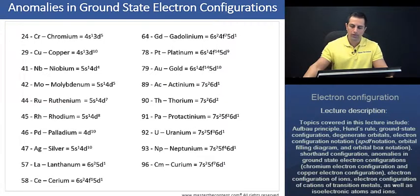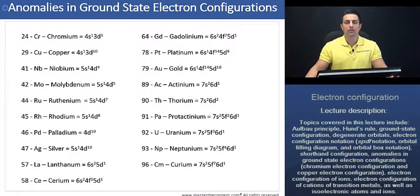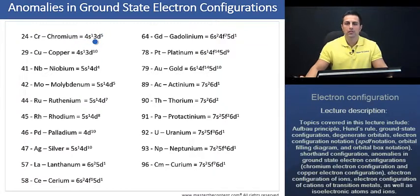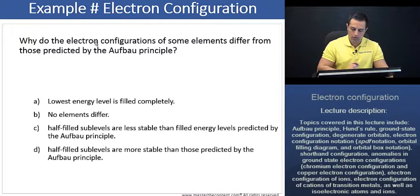Here we've provided a list of anomalies in ground state electron configurations, beginning with the atomic number, the elemental symbol, the name of the element, and its ground state electron configuration. Should you need it, it's here for you.